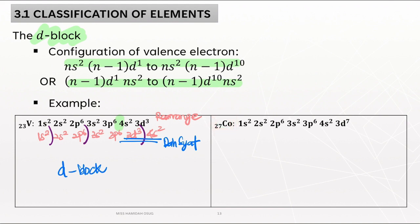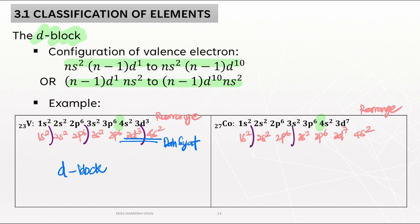For cobalt, the highest principal quantum number also reaches N equals 4. Rearrange the electronic configuration first, then draw the border between the principal quantum numbers. You can see there is a split there — meaning cobalt also belongs to the D block.